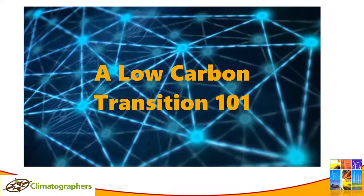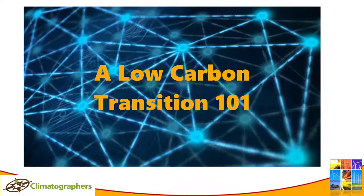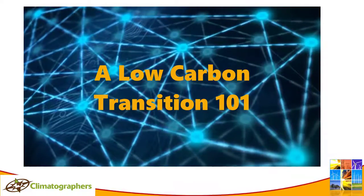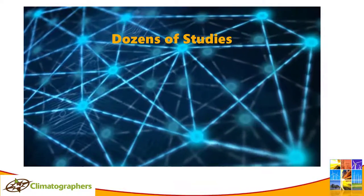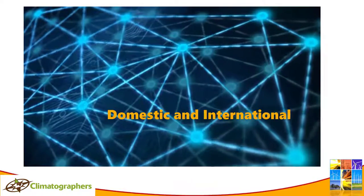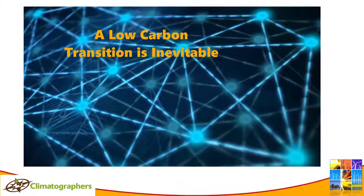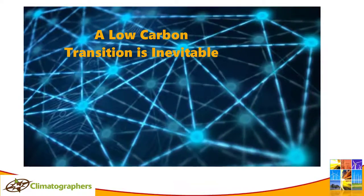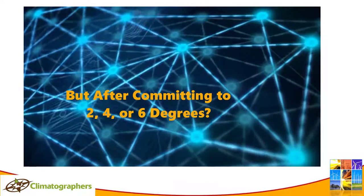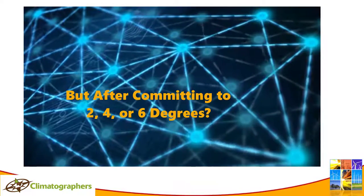We've been talking about a low carbon transition for decades, but the transition has been slow and many questions remain. There have been dozens of studies covering domestic and international energy systems. It does look like a low carbon transition is inevitable, but will it occur after committing to 2, 4, or 6 degrees of climate change?